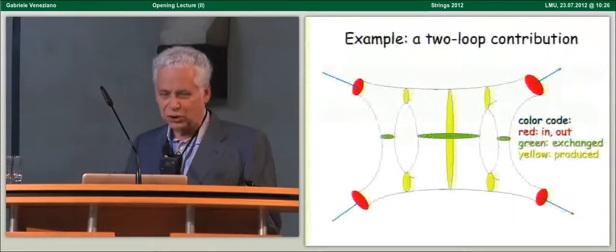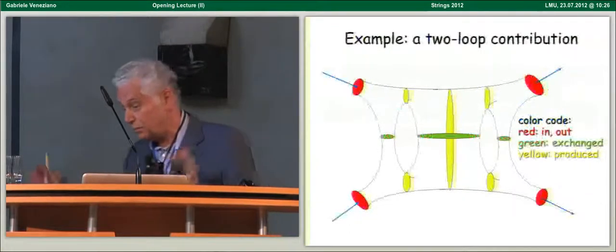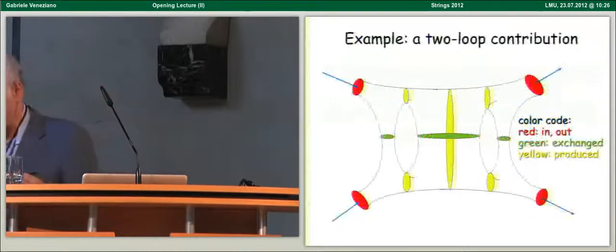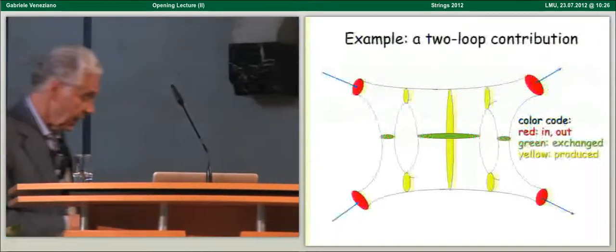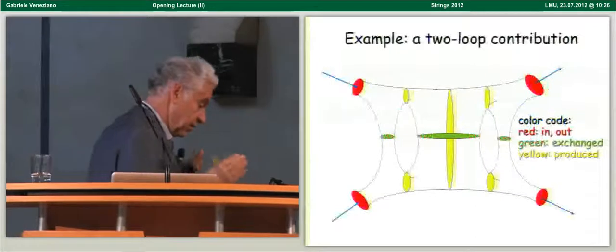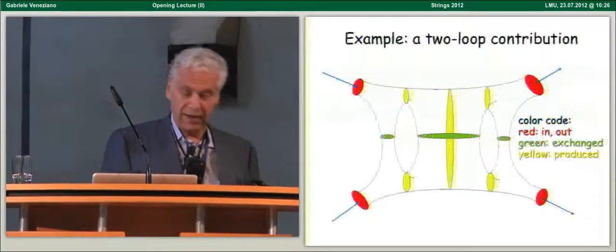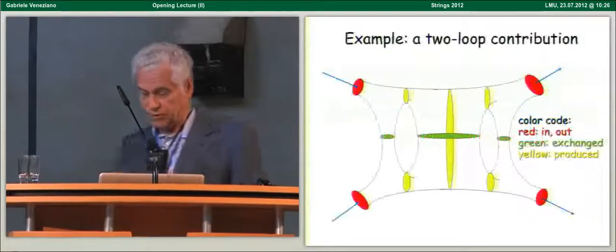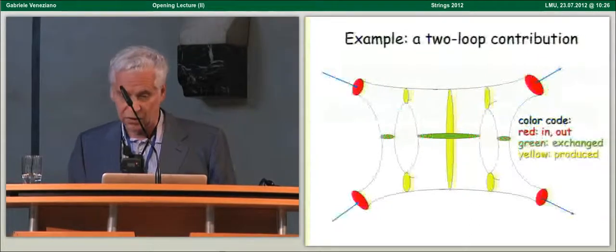So, the first is trans-Planckian energy string-string collisions in flat spacetime. This is some work I started with Amatian Ciaffaloni in 1987 and has been going on for so long. It will only be an executive summary so don't worry. So, just a little bit of a picture. This is an example. We are supposed to resum loop diagrams in the limit, in the trans-Planckian energy limit of superstring collisions.